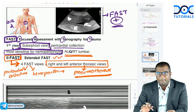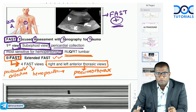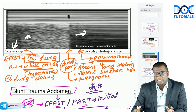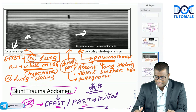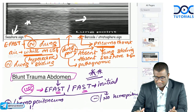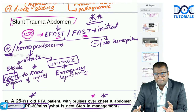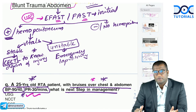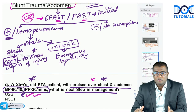Summary of FAST/E-FAST: the first view is subxiphoid; most sensitive for hemoperitoneum is right upper quadrant. E-FAST adds antithoracic views and evaluates pneumothorax. Pneumothorax appears as barcode/stratosphere sign with absent lung sliding. Blunt trauma abdomen protocol: initial investigation is ultrasound (FAST/E-FAST); if FAST positive and stable → CECT; if FAST positive and unstable → emergency laparotomy.